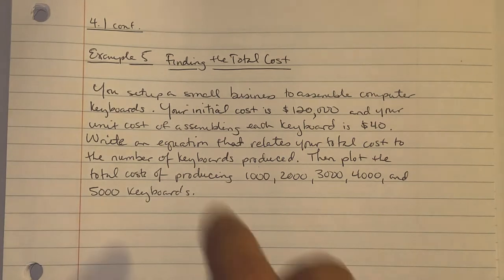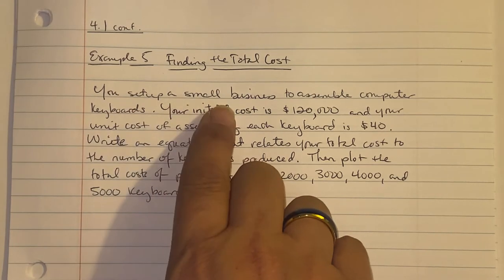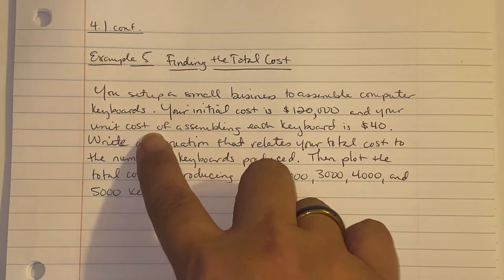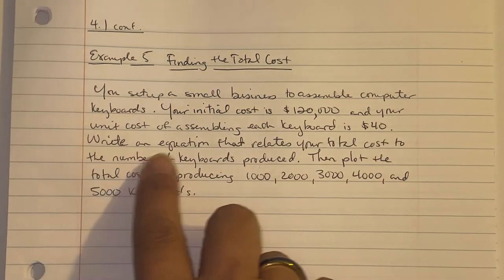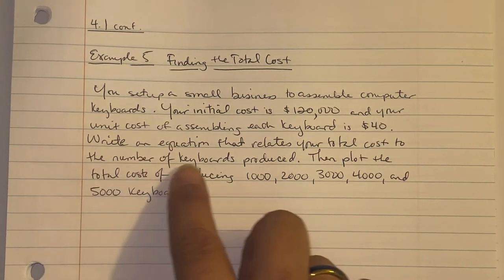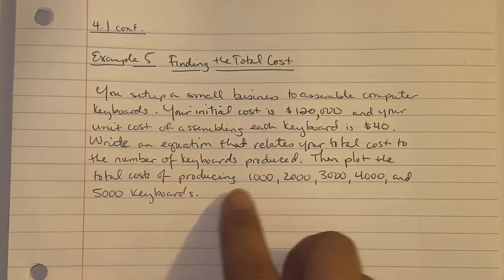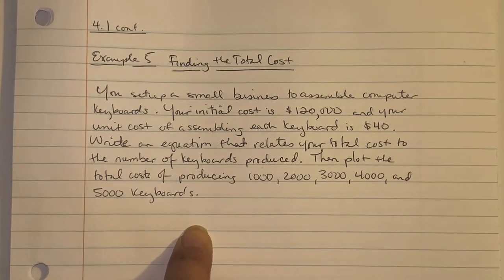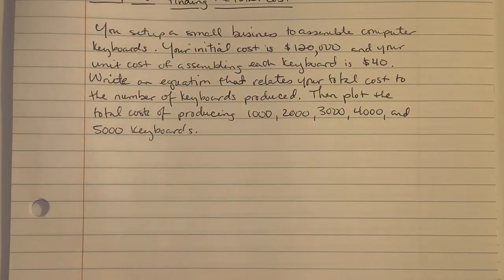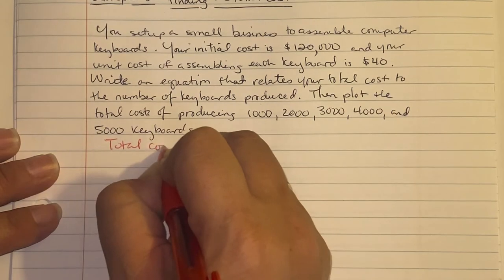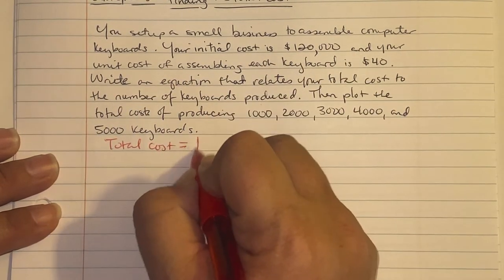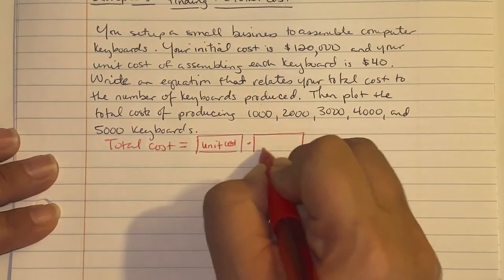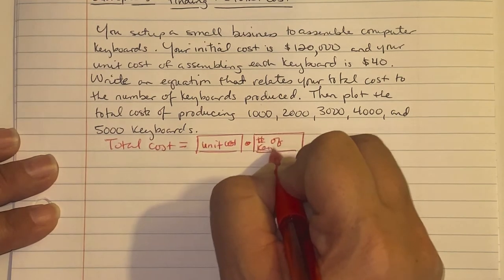Example 5: Finding the Total Cost. You set up a small business to assemble computer keyboards. Your initial cost is $120,000 and your unit cost per keyboard is $40. We need a verbal model: Total Cost equals Unit Cost times Number of Keyboards plus Initial Cost.